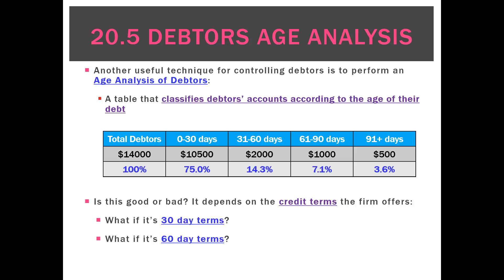If our credit terms were 14 days, well, we've got a big problem because a lot of our debtors are beyond that. Perhaps if our credit terms are 90 days, that means only these amounts are overdue. And given that that's 96.4%, that's a very good result.